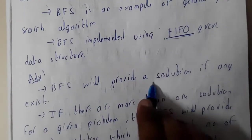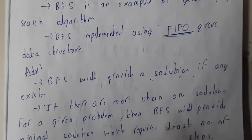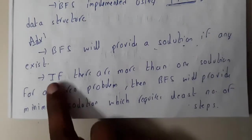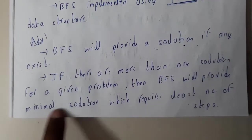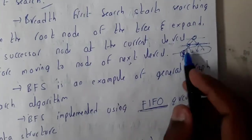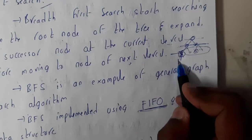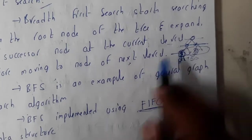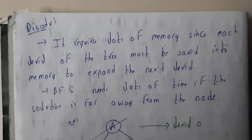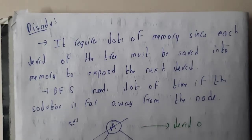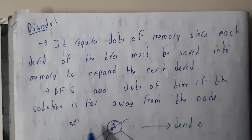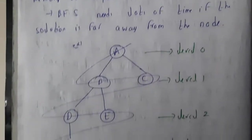The advantages of BFS: it will provide a solution if any exists - we can guarantee it will give a solution, though it may take more time. If there are more than one solutions for a given problem, BFS will provide the minimal solution requiring the least number of steps. The disadvantages: it requires lots of memory since each level of the tree must be saved into memory using FIFO, storing each level one after the other, which wastes space. BFS also needs lots of time to solve any problem.